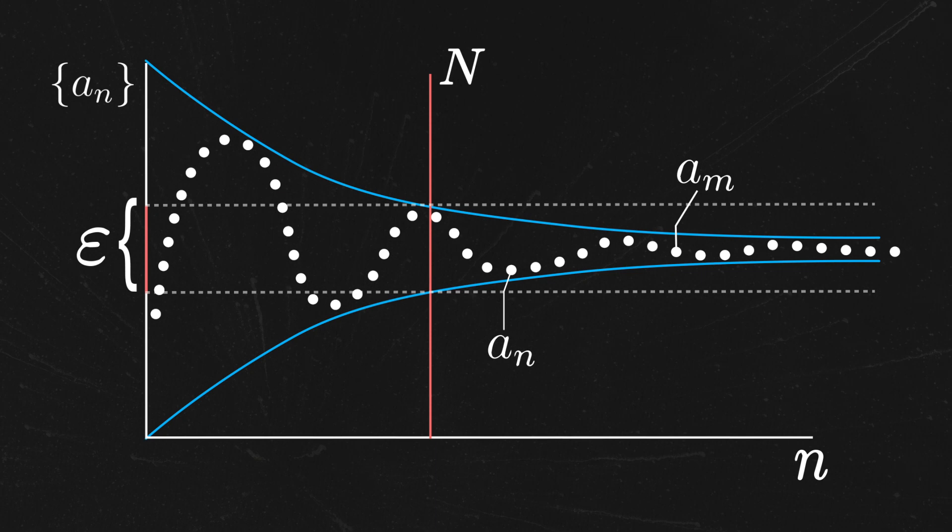So, for any positive distance, eventually all the terms of the sequence become closer to each other than that distance epsilon.